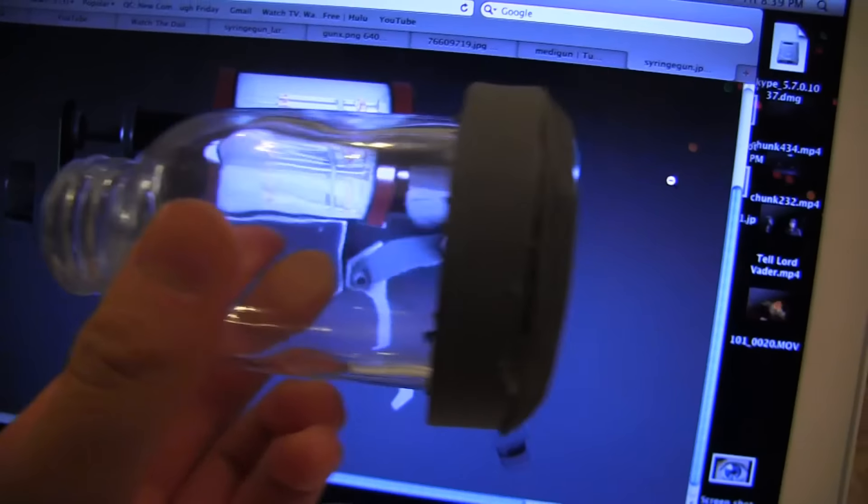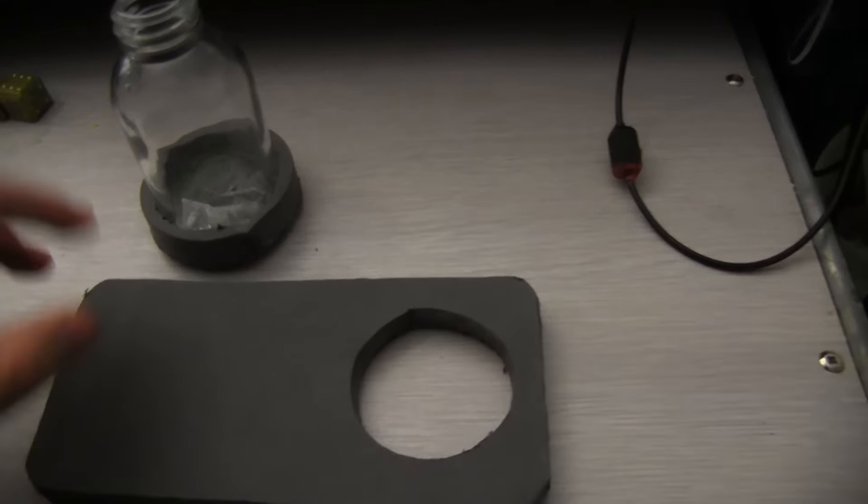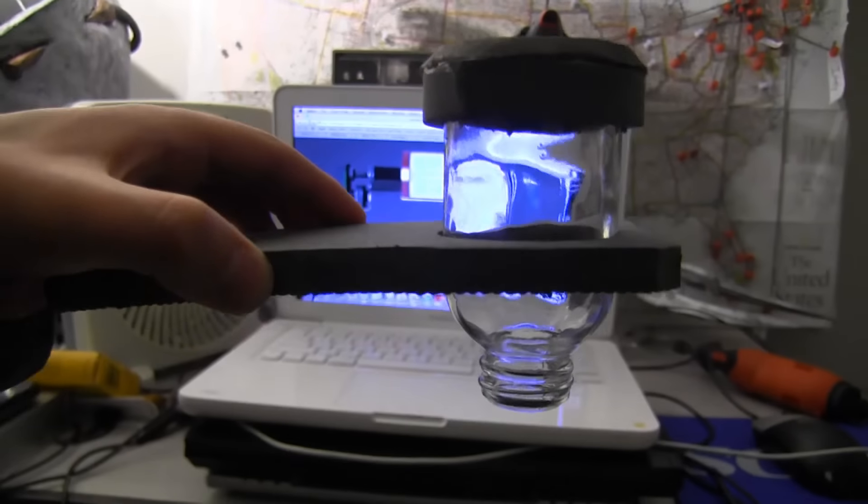Cut the ends off the soda bottle and remove the label. Cut and Dremel pieces of EVA foam for the back of the glass jar. I guess it's supposed to be a serum vial or something. Cut this piece for the stock of the gun and make sure the jar fits through the hole.